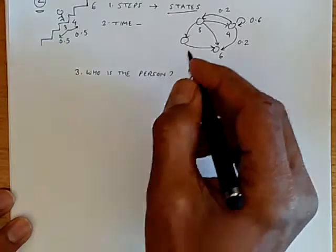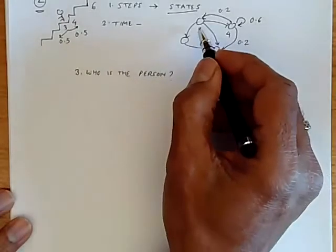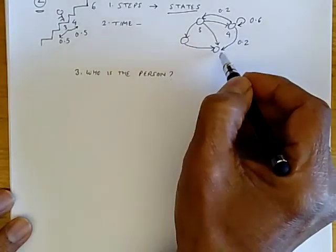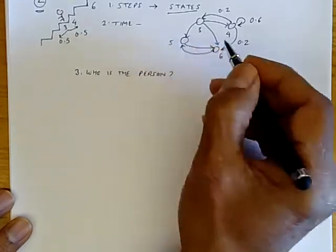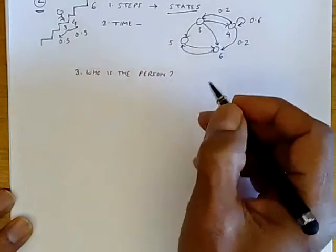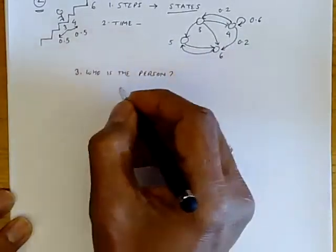So what we have is a stochastic process is in state three, then state four, and then state six, and then from six, perhaps it goes to four, five again. I don't know, but it just goes in some fashion. So there is no person as such.